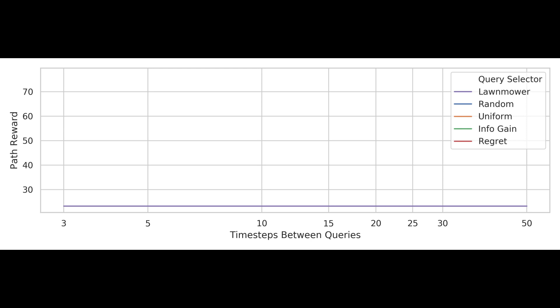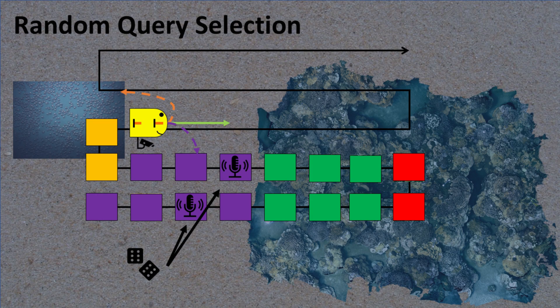The first active learning approach is random selection, which would just have the robot send the expert random images. While this might seem inefficient, it does have the favorable property that the distribution of images labeled will match the distribution of phenomena encountered.